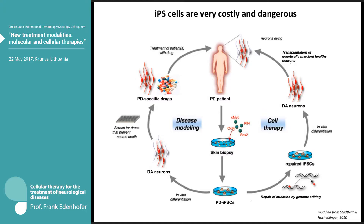We have a novel source of transplantable cells from the patient — in this case exemplified by a Parkinson's disease patient. One can derive cells via skin biopsy and reprogram them with the four Yamanaka factors to derive patient-specific induced pluripotent stem cells. These can be used in two different directions: either for disease modeling — where those cells are the basis of an unlimited source of patient-specific cells of interest, in this case dopaminergic neurons, for drug screening and study of disease pathophysiology — or for autologous cell therapy, where one re-differentiates the cells into the desired cell type and transplants them back into the patient.